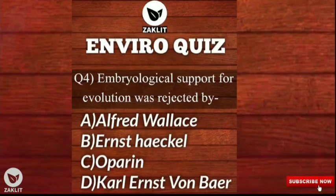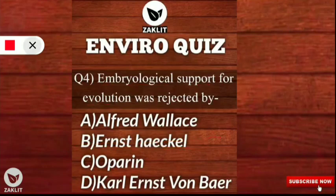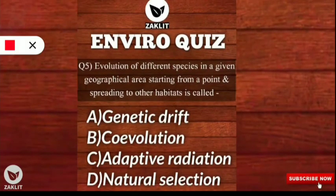The next question also comes from the embryological portion of evolution, but this time it asks who rejected the embryological support for evolution. While Ernst Haeckel proposed it, the theory was rejected by Karl Ernst von Baer, also known simply as Karl von Baer. He rejected the embryological theory proposed by Ernst Haeckel.